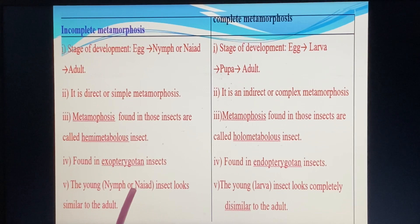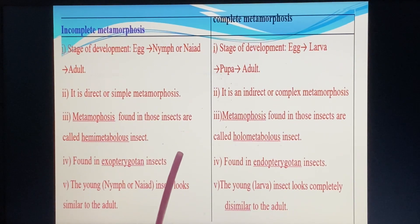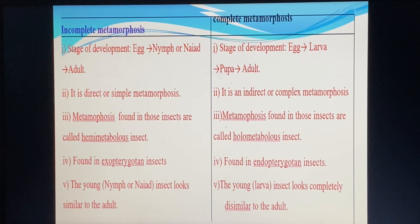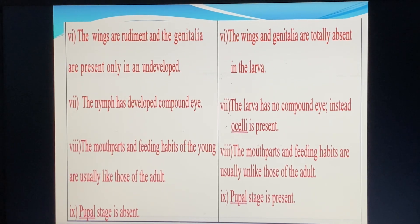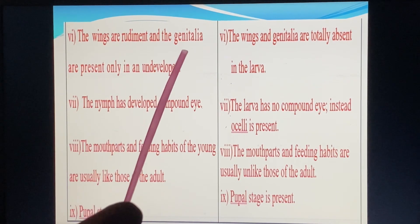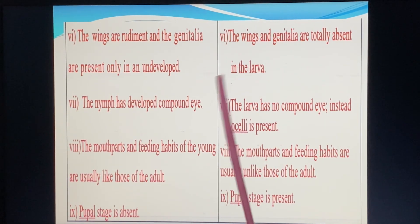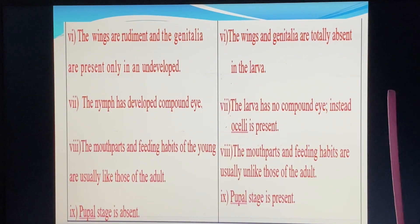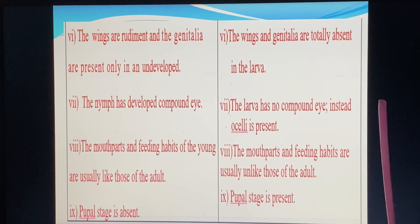In hemimetabolous insects, the nymphs and adults are similar in appearance. When they are young, they look similar to the adult animal. The nymph and adult are similar, but the wings and genitals are properly absent in the nymph — wings and genitals are in an undeveloped state. This is called incomplete metamorphosis.